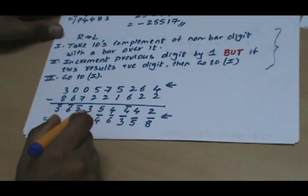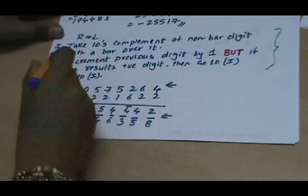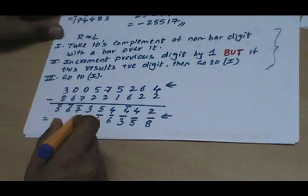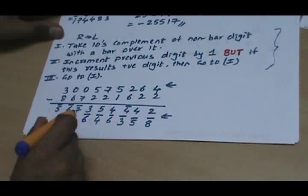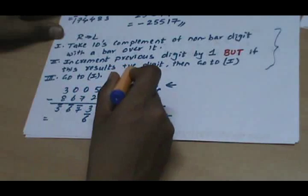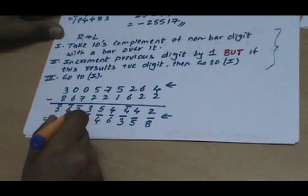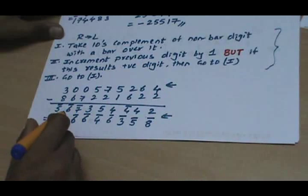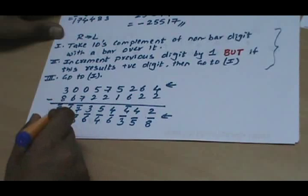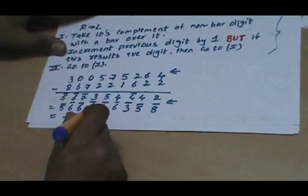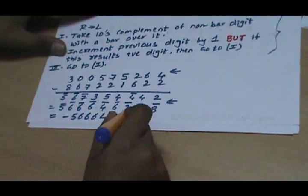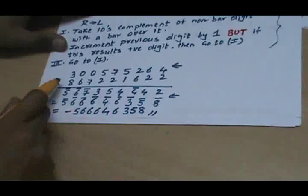We go to the next digit, which is 3; we increment it by 1 giving 4. Again it is a positive digit, so we go to step 1 without writing: 10's complement of 4 gives 6̄. We go to the next digit, which is bar 7; incremented by 1 gives bar 6 — since it is a negative digit we write down bar 6. The next digit is again a win-column digit so we need not do anything. So the final result can be written as minus 5 6 6 6 4 6 3 5 8 — that is the answer to your subtraction.